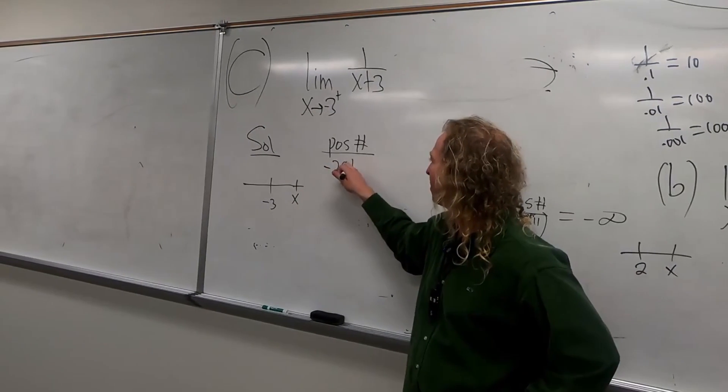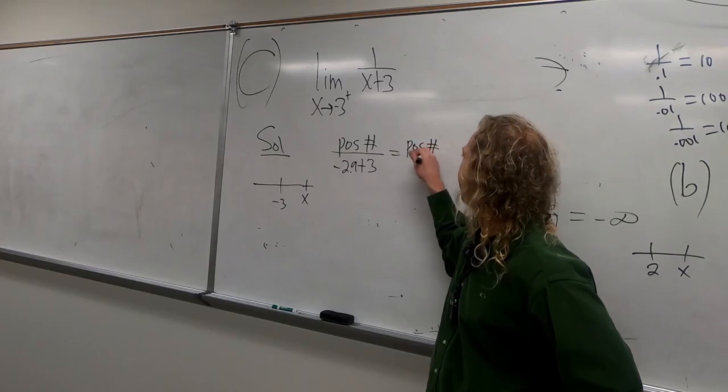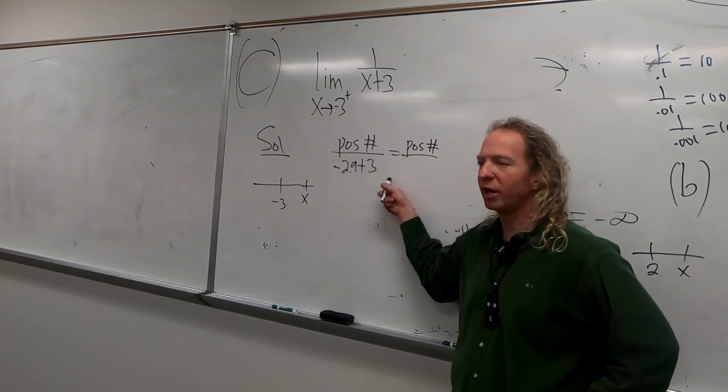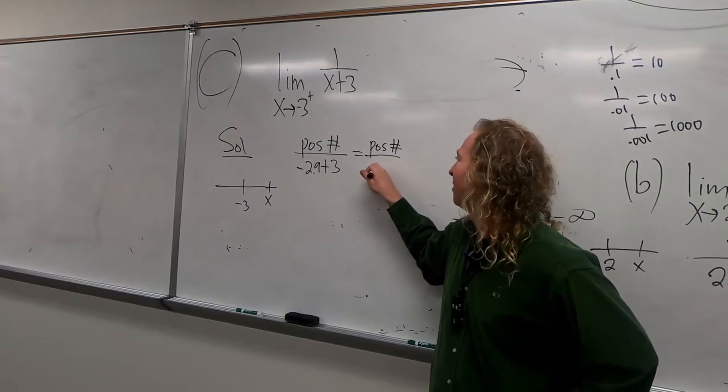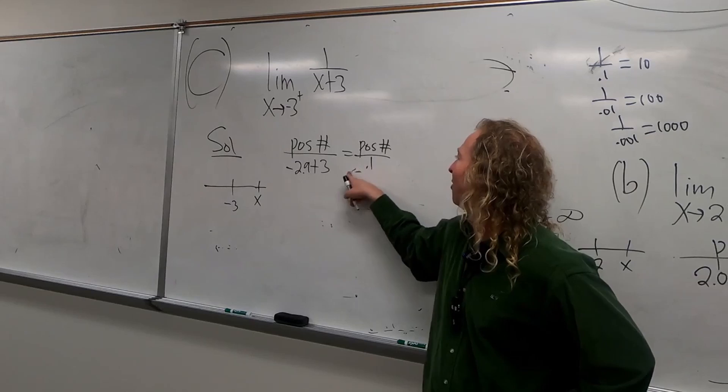So negative 2.9 plus 3. So it's a positive number. And then we have negative 0.1, right? So it would be positive 0.1? Yeah. Oh, positive 0.1.